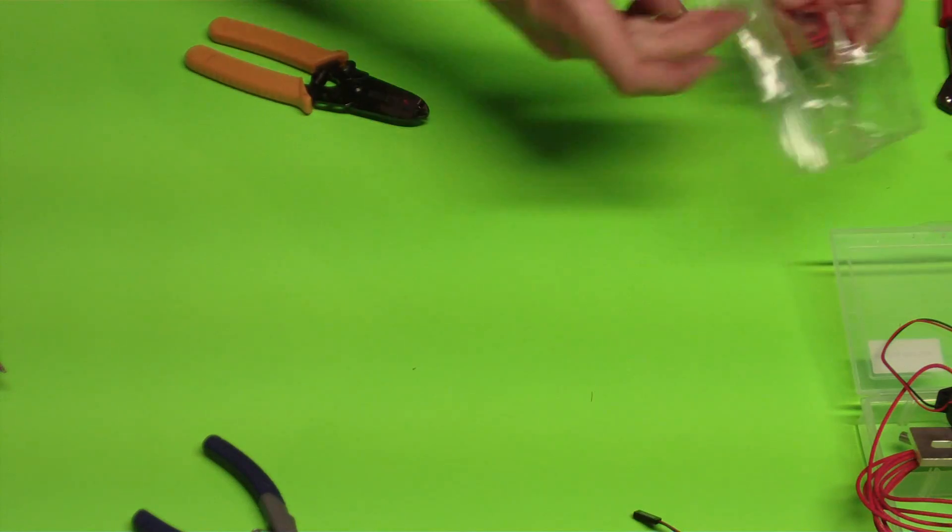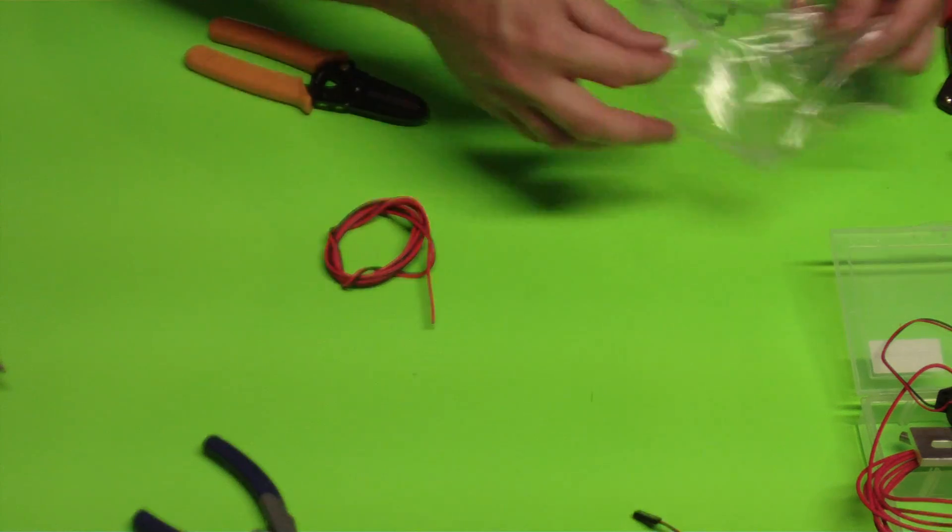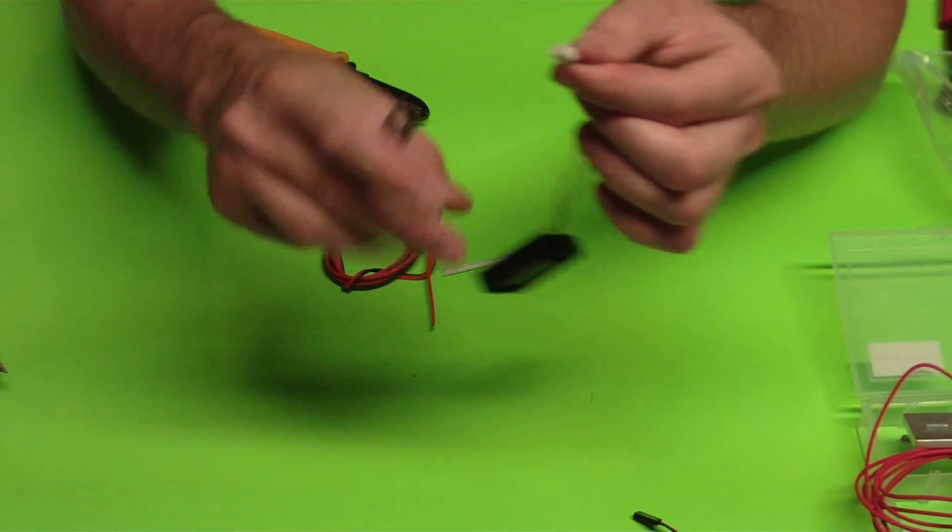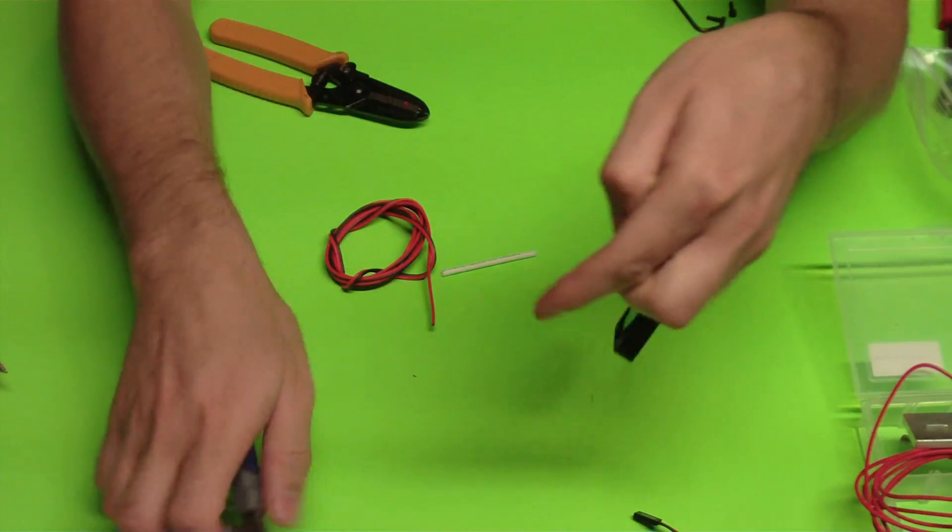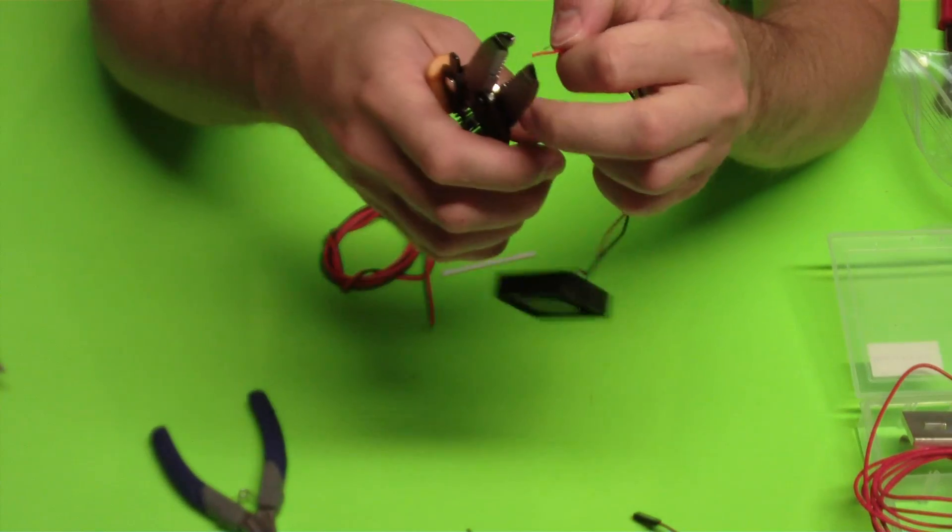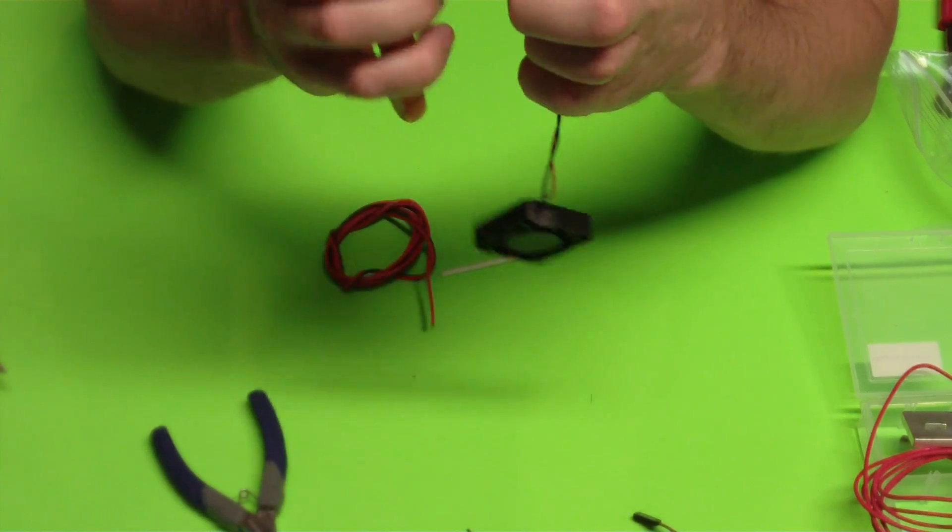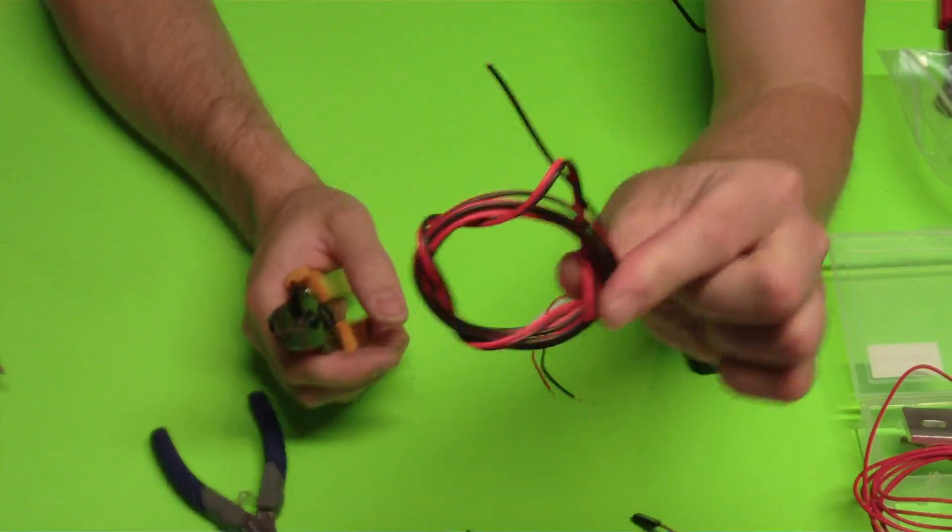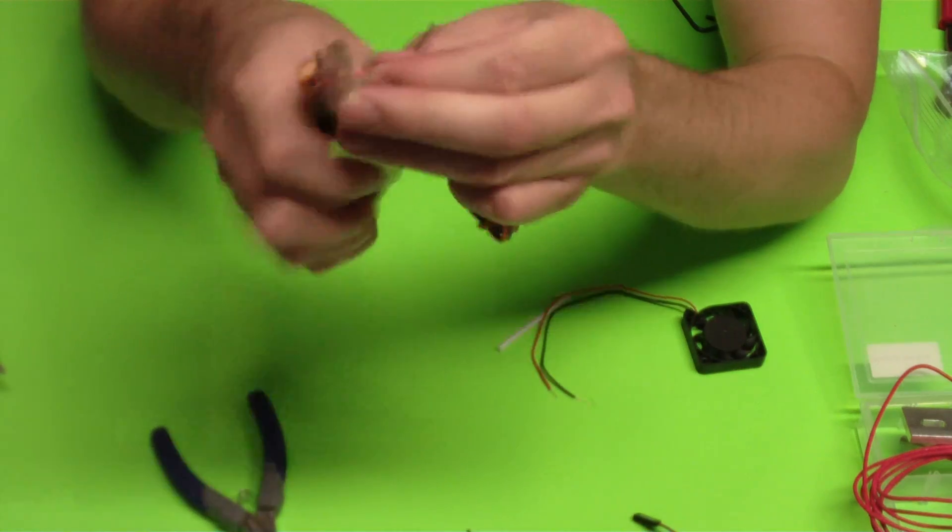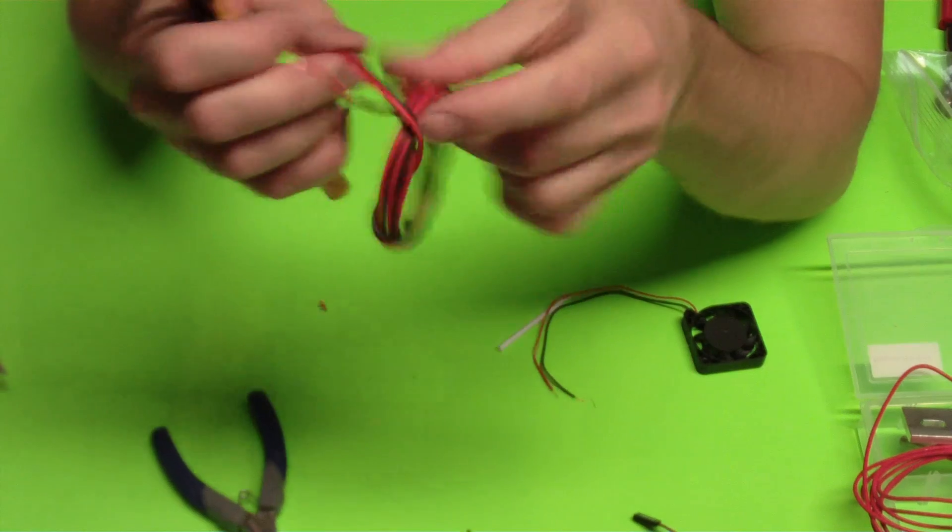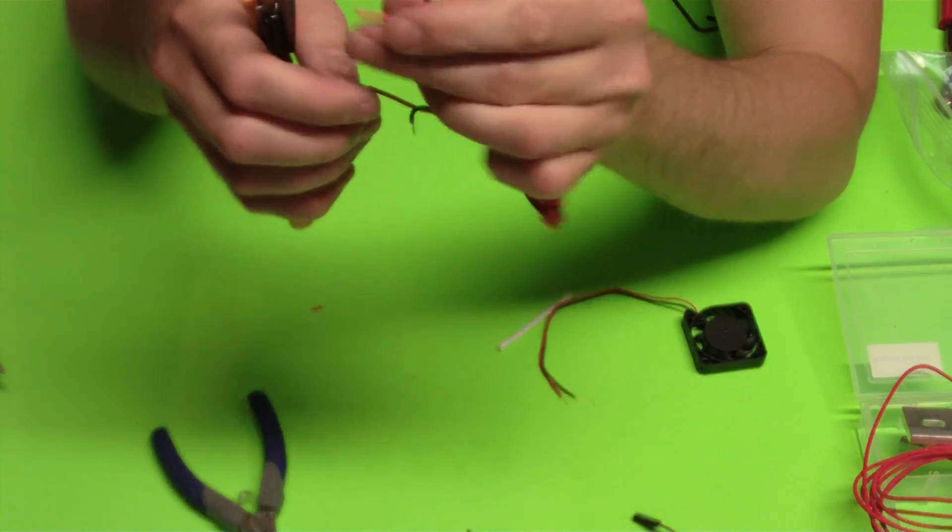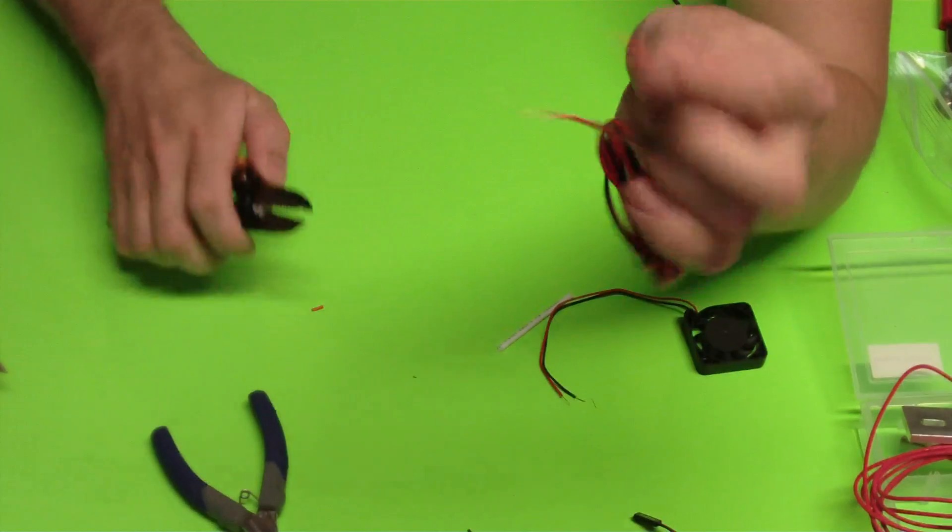The next one that we're going to do is the fan. Your fan is going to come with a little connector at the end. We don't need that, so we're just going to cut that off. Do the same thing here. I'm going to strip some of the wires so that I have enough wire to solder on. And then you've got about a meter of this red and black wire. We're going to do the same thing there. I'm going to strip off some insulation on both ends.